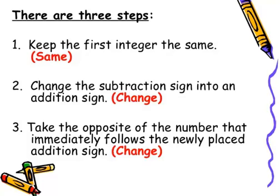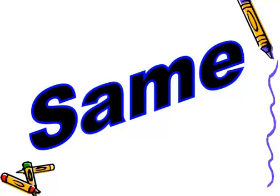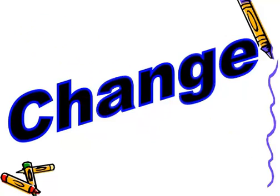Here it is — there are three steps. First, keep the first integer the same. Second, change the subtraction sign into an addition sign. Third, take the opposite of the number that immediately follows the newly placed addition sign. We summarize this as: same, change, change.